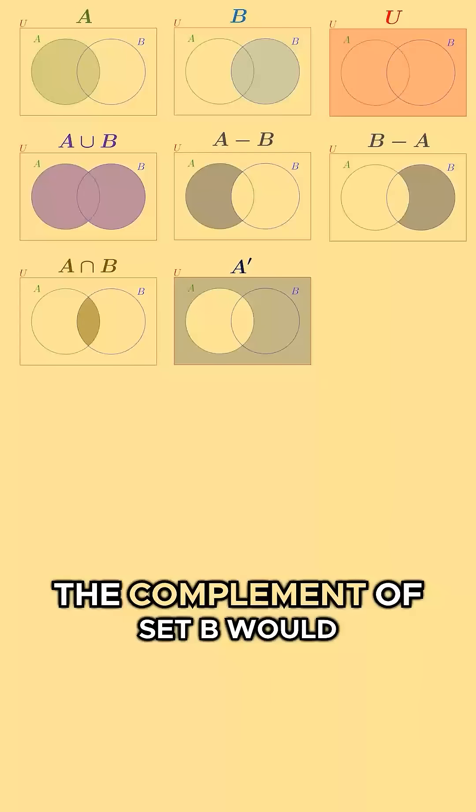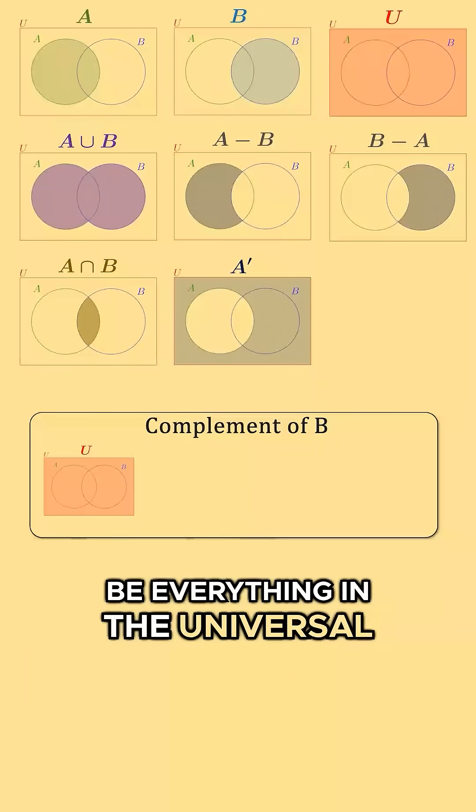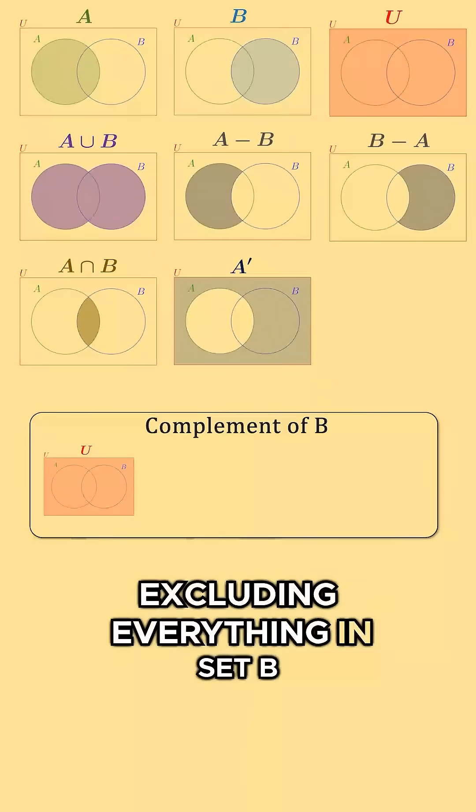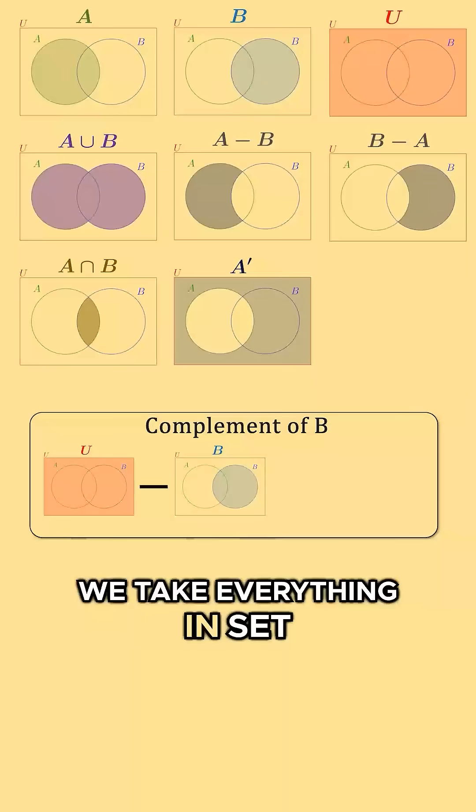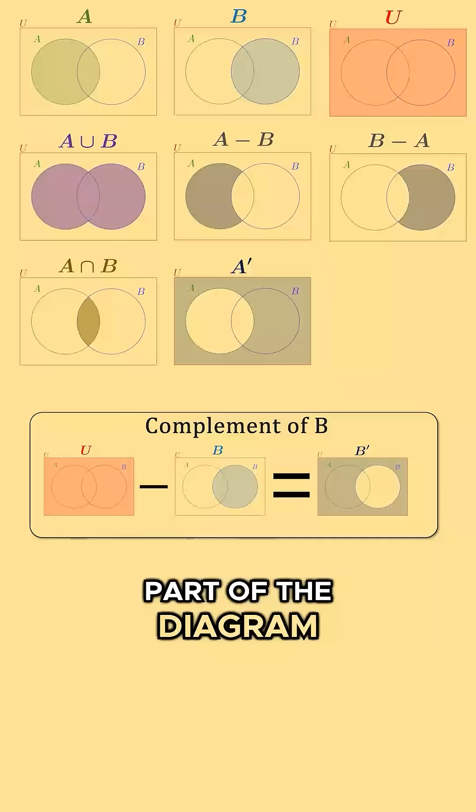The complement of set B would be everything in the universal set excluding everything in set B. We take everything in set B out of the universal set and are left with this part of the diagram.